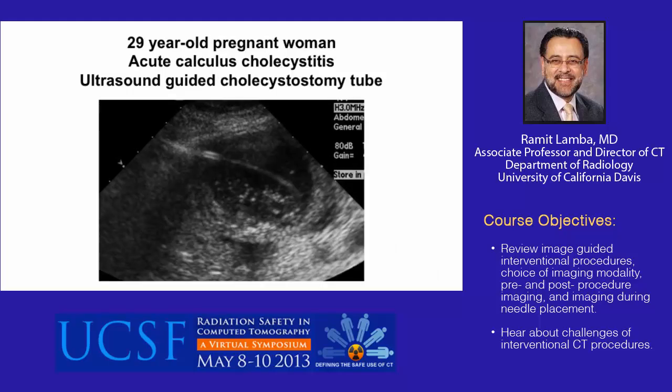This is a 29-year-old pregnant woman who presented with acute cholecystitis. Given her advanced pregnancy, surgery was deferred, and a cholecystostomy tube was placed into the gallbladder under ultrasound guidance.